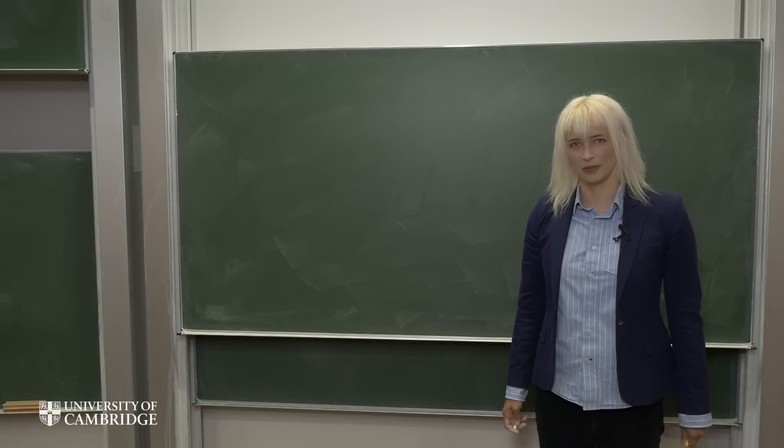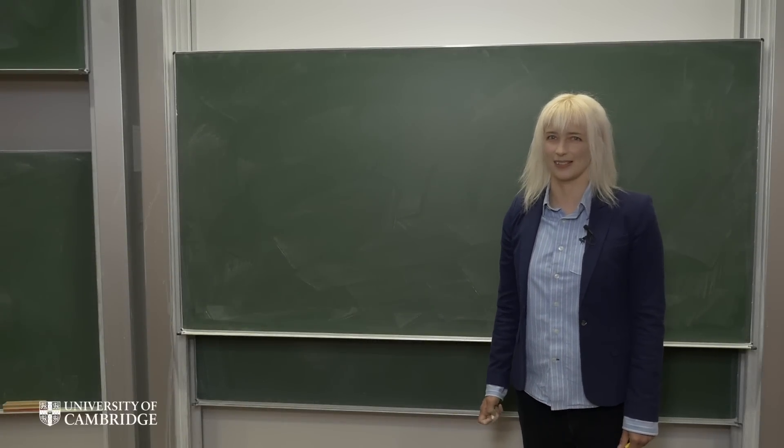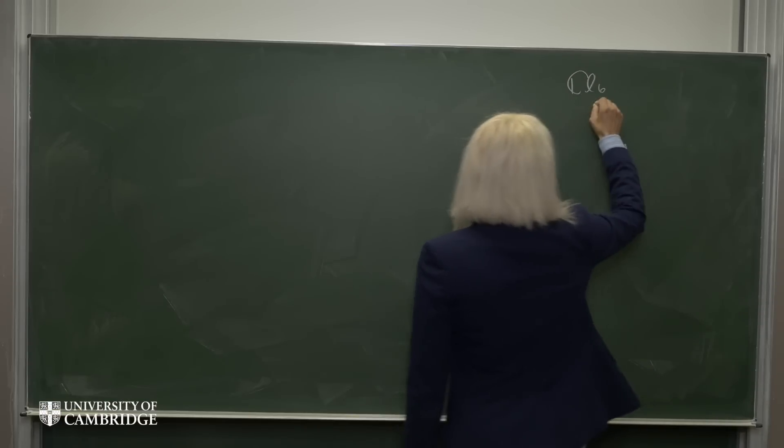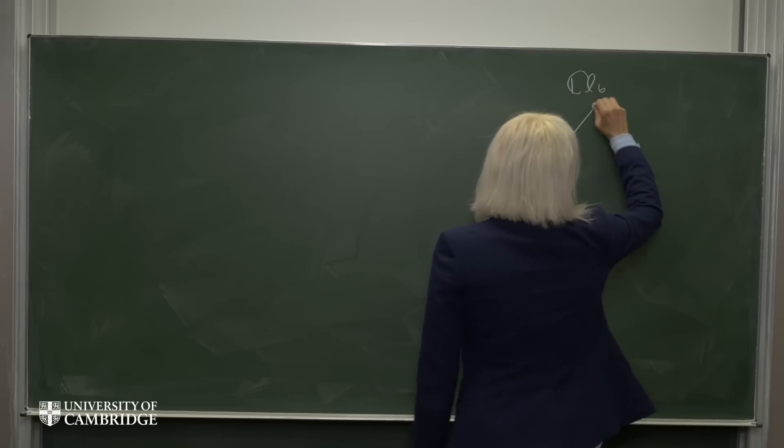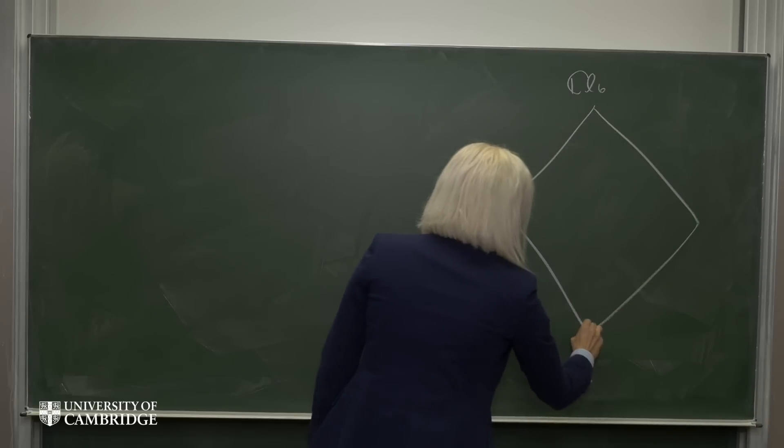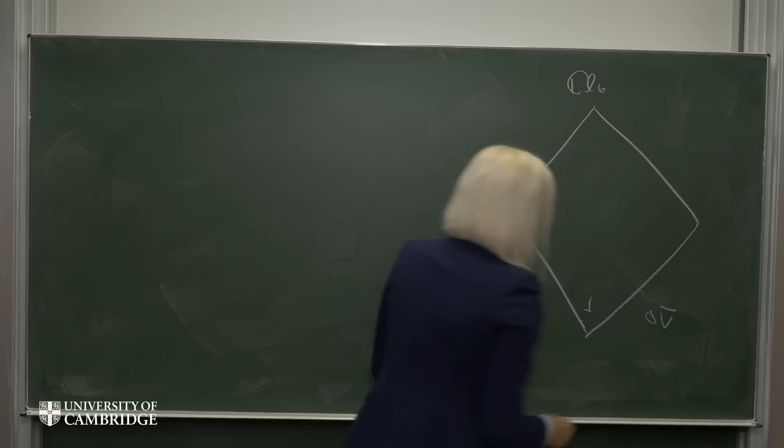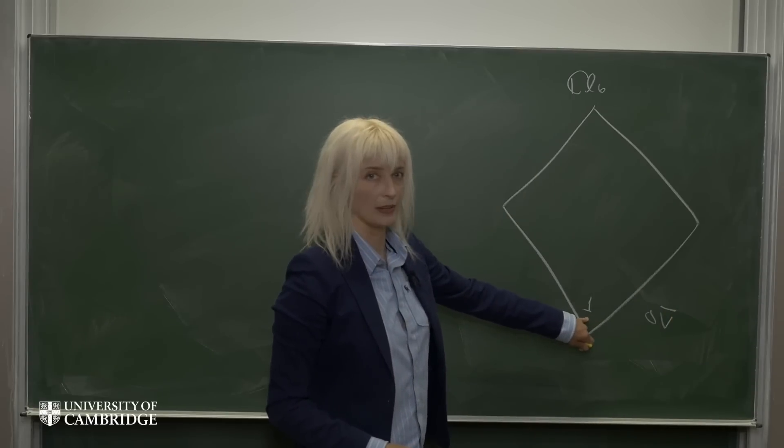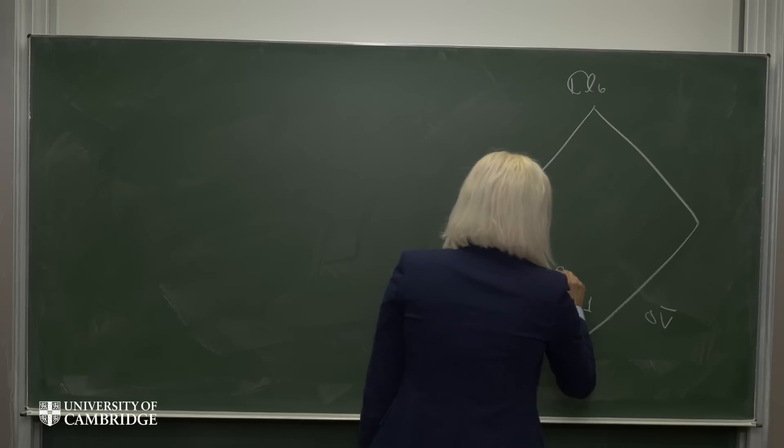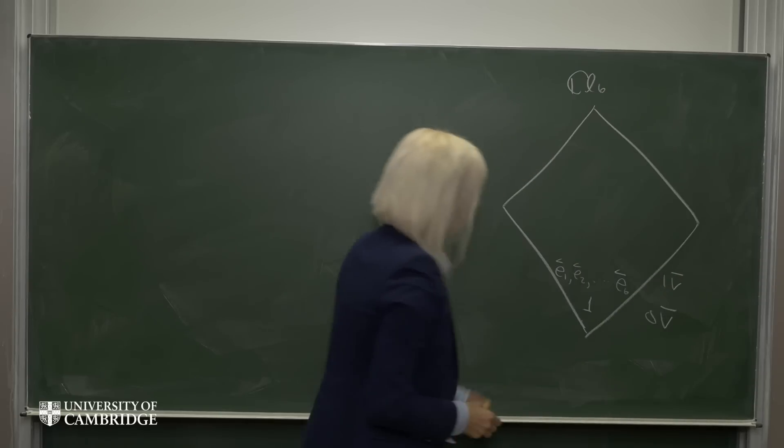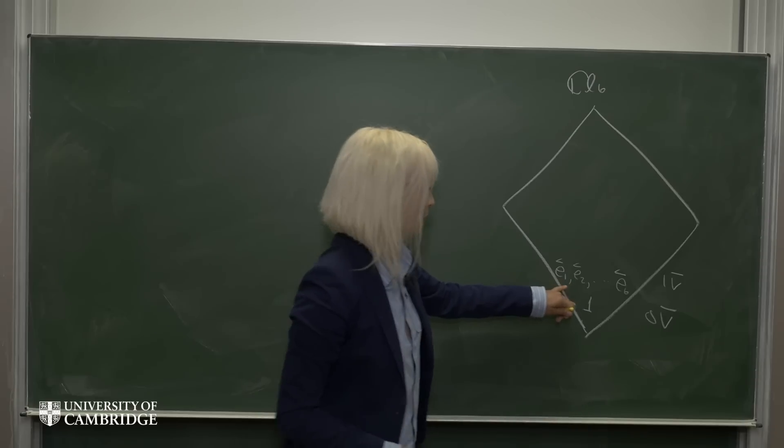Now we just showed that the complex octonions generate the Clifford Algebra CL6. Here we've got the zero vector at the bottom, which is just the unit. And on the next level up, we have e1 to e6.